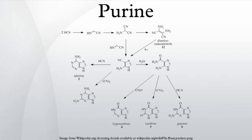Additional high purine sources include meat extracts, herring, mackerel, scallops, game meats, beer, and gravy. A moderate amount of purine is also contained in beef, pork, poultry, and other fish and seafood.